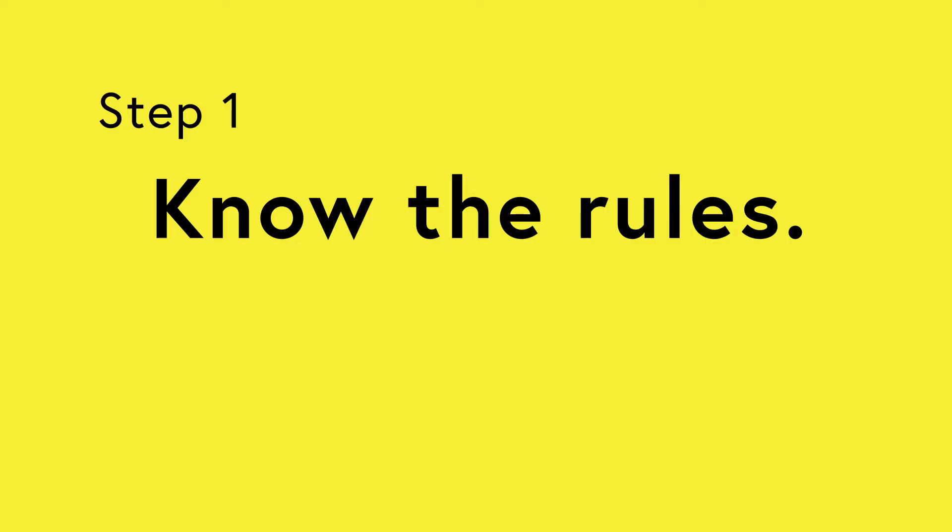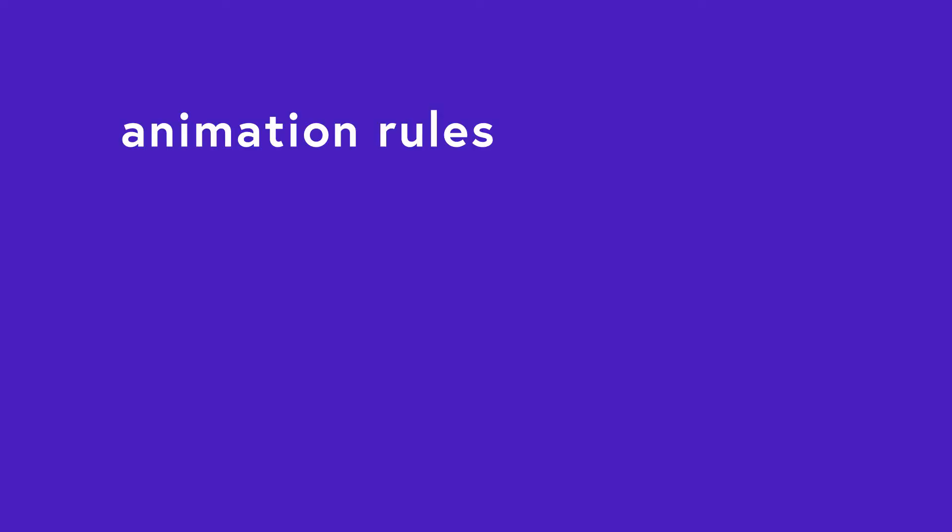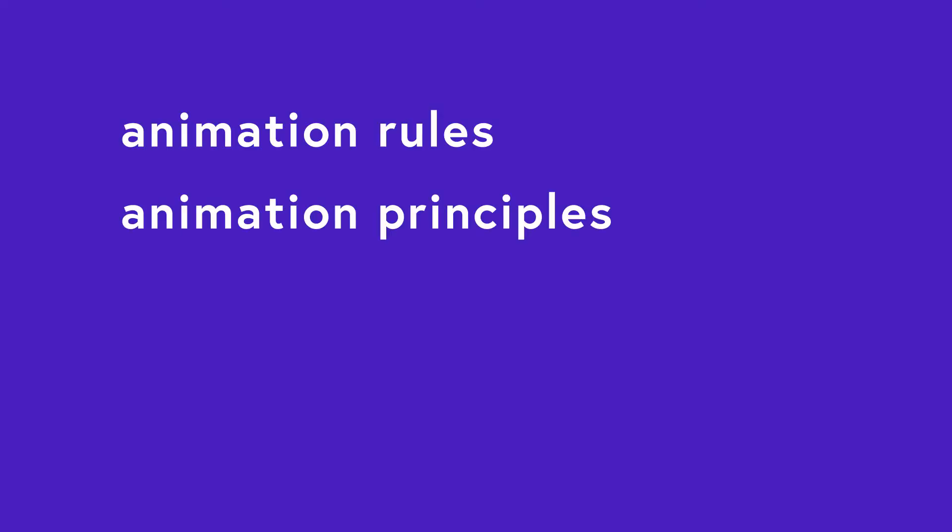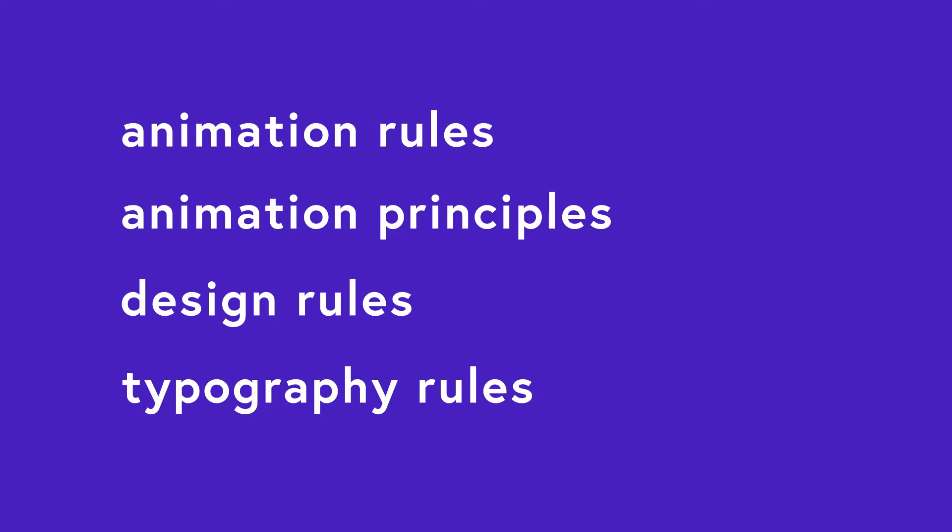Here is what we do in our studio. Step 1: know the rules. Before you can actually think outside the box, you have to think inside the box — you have to know how big the box is. You have to know the rules. And depending on different industries, for example in animation, those rules include animation rules, animation principles, design rules, and typography rules.